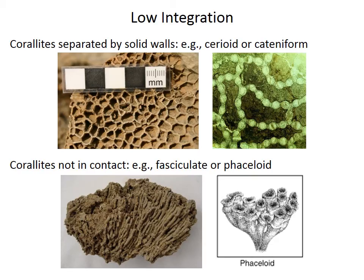Low integration corals would be ones where the corallites are separated by solid walls, as we see in many serioid corals — the example on the left is a tabulate, but there are also serioid rugose and serioid scleractinian corals — or cateniform corals, these chain corals in the right-hand picture,